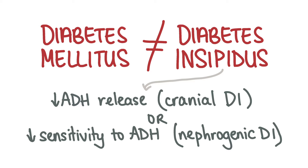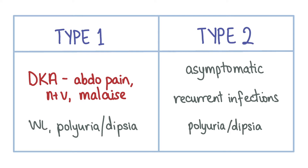Patients with type 1 diabetes can present to A&E with symptoms of DKA or diabetic ketoacidosis, or they may present to primary care with symptoms like polyuria, polydipsia, general malaise, weight loss and abdominal pain. Patients with type 2 diabetes are often asymptomatic and picked up incidentally, but some patients may present with polyuria, polydipsia and recurrent infections such as UTIs or candidiasis.